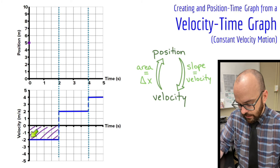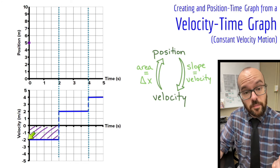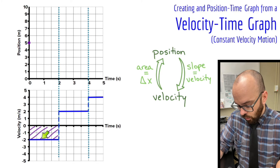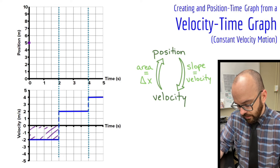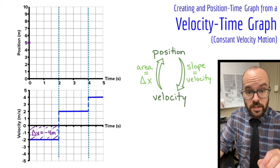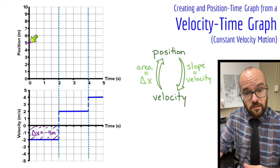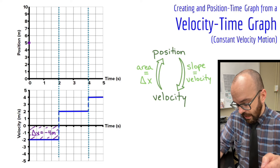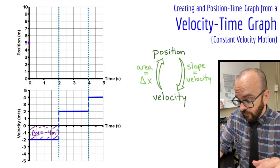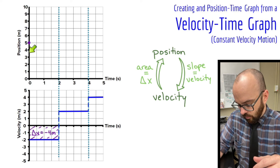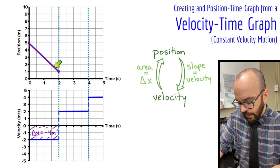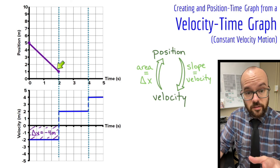I'm going to multiply height times width of the rectangle. The height is negative two meters per second — the negative is important, it tells me I'm moving in the negative direction. Two seconds pass during that interval. Negative two meters per second times two seconds gives me negative four meters of displacement. Starting at positive five, five plus negative four brings me down to positive one. I end that interval at a position of positive one, connected with a straight line for constant speed.